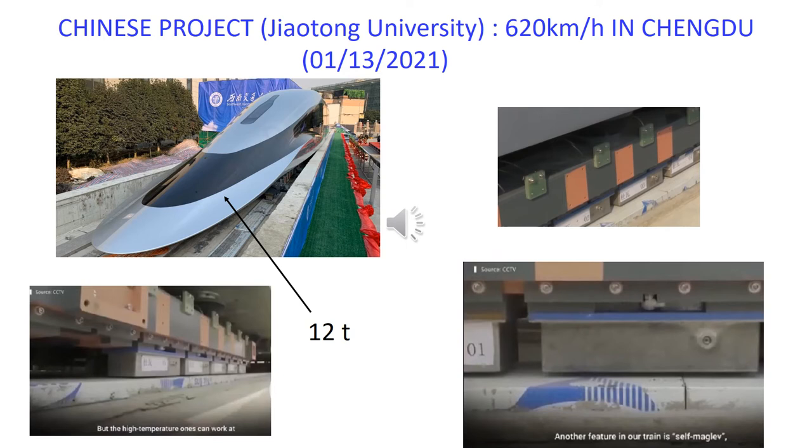In this slide, we see a prototype of SML vehicle built in China. It could run at 620 kilometers per hour and carries the same cryostats as the Brazilian vehicle.